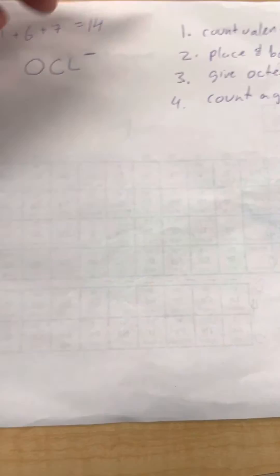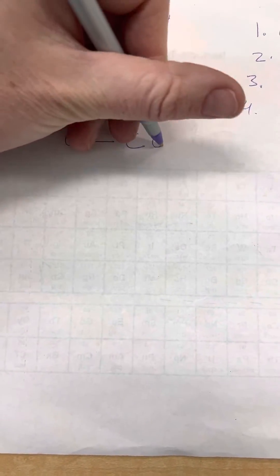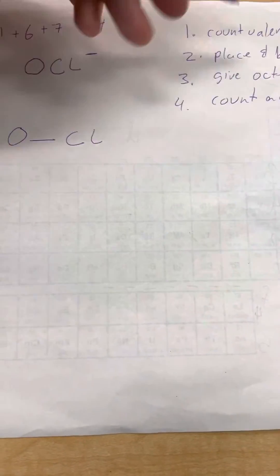Okay, so now let's just go back to the steps. Once we count the valence, let's place and bond. So we'll put the O, compare it to the Cl. Then we're going to go ahead and give everything an octet.